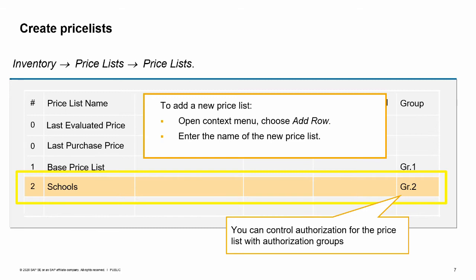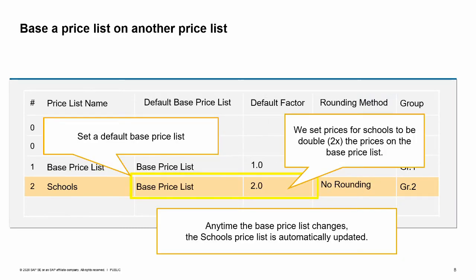You can control who is authorized to change the price list by using authorization groups. One useful option for price lists is to base a price list on another price list. In our example, the price list for schools will be based on our base price list that we have previously set up. We would like the prices on the school's price list to always be double the prices on the base price list. We set the default base price list and a default factor of 2.0. Each priced item on the base price list will appear at a price set at 200% of the item price on the base price list.